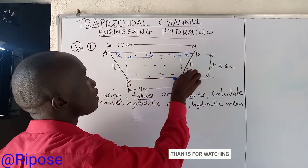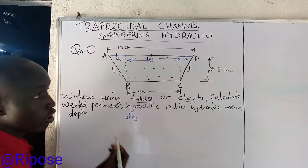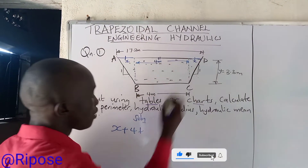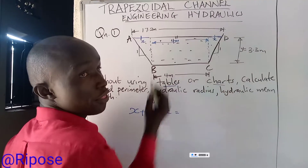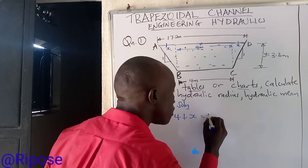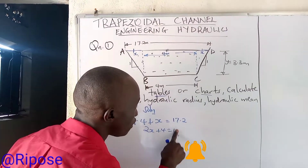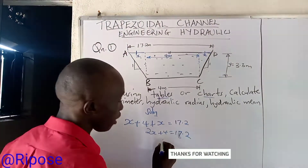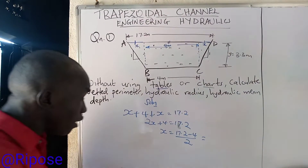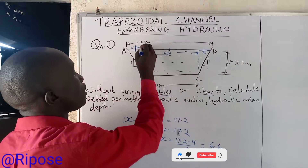To find x, we use the surface width. We can say x plus 4 plus another x equals the surface width, which is 17.2. So 2x plus 4 equals 17.2. That means x equals (17.2 minus 4) divided by 2, which gives us x equals 6.6 meters. So this side is 6.6 meters and the other side is also 6.6 meters.